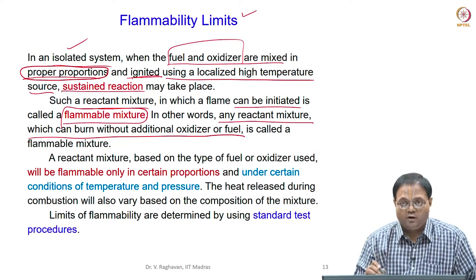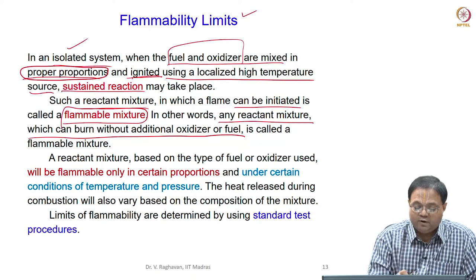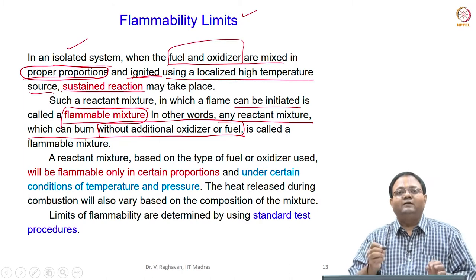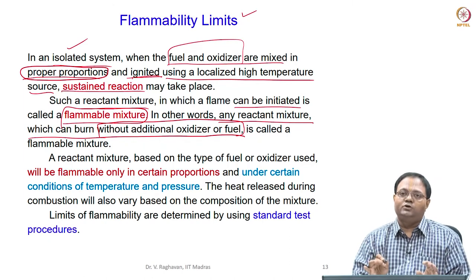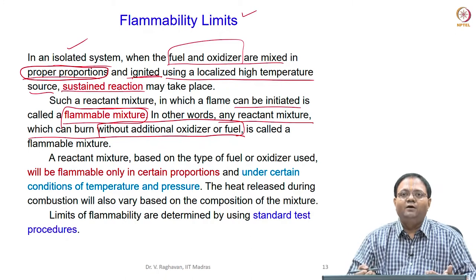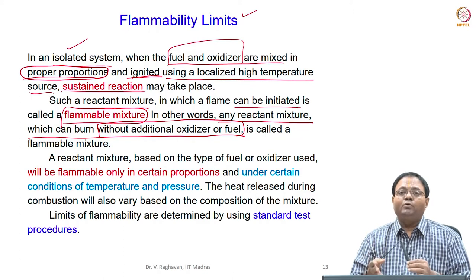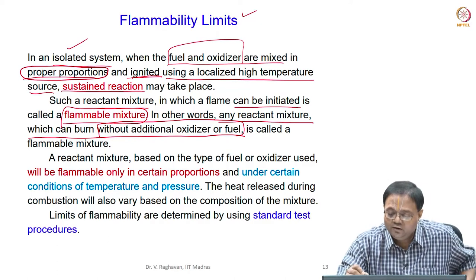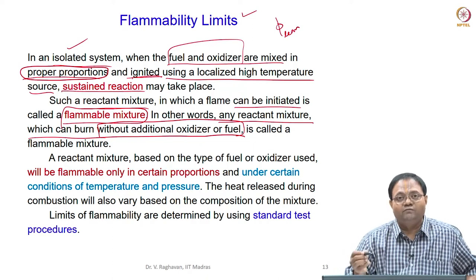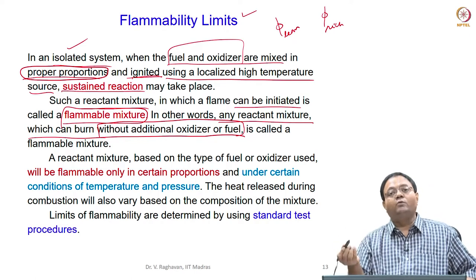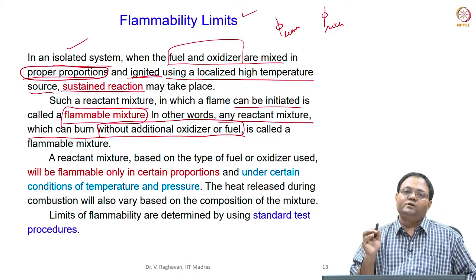A flammable mixture is the reactant mixture which can burn without additional oxidizer or fuel. That means it has adequate amounts of fuel and oxidizer already in the mixture. If I isolate the system and feed nothing to it, it has sufficient fuel and oxidizer to burn. So what is the lean value of phi (less than 1) or rich value of phi (more than 1) which will accomplish ignition?